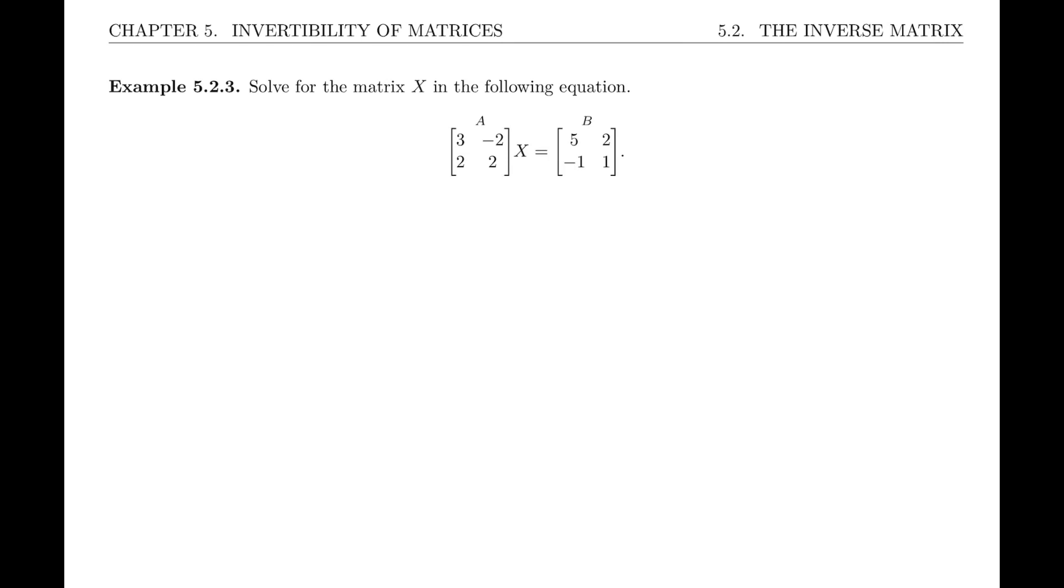First, a couple quick remarks. In the real number equation we had ax equals b and both a and b are the constants. You can think of it the same way—these two matrices are the constant matrices. They're already named A and B. And of course X is the unknown matrix.